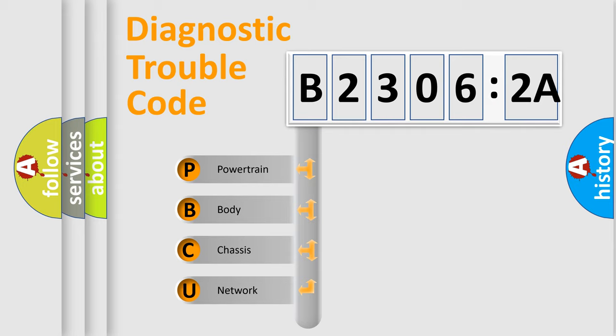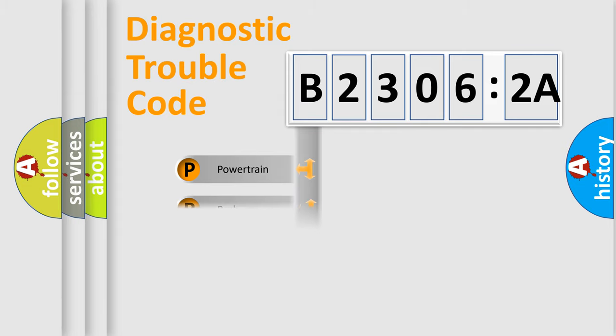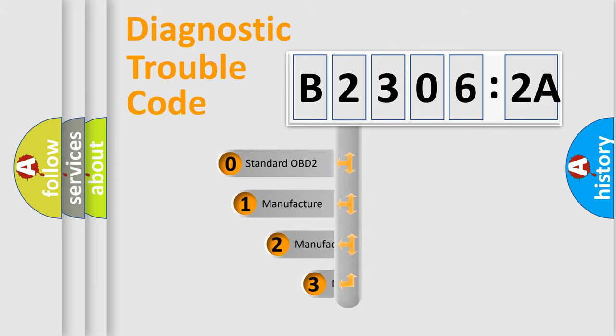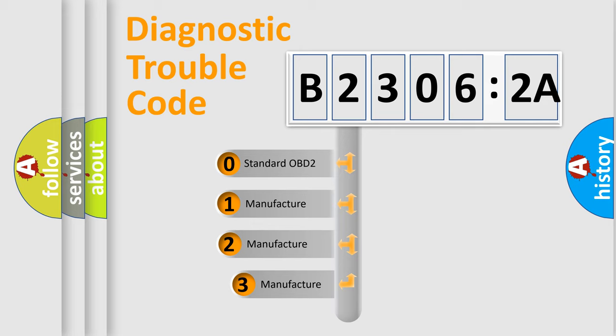We divide the electric system of an automobile into four basic units: powertrain, body, chassis, and network. This distribution is defined in the first character of the code.